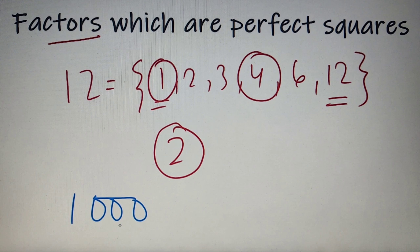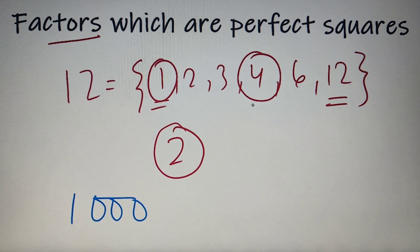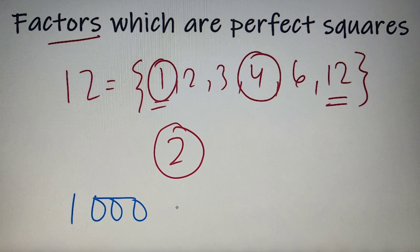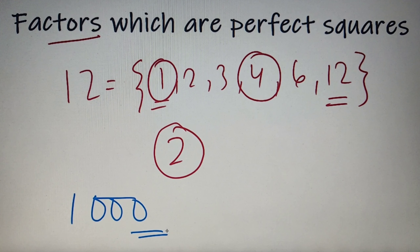1000 is a larger number compared to 12, and finding the number of perfect square factors by this method for 1000 will not be as simple. So let's discuss a simple formula by which we can easily calculate the number of perfect square factors for any given number.